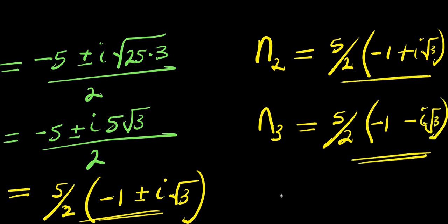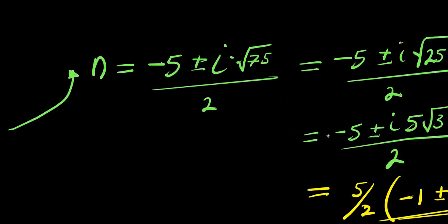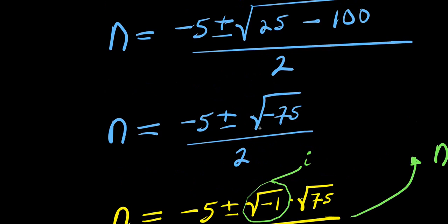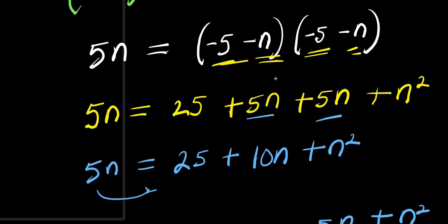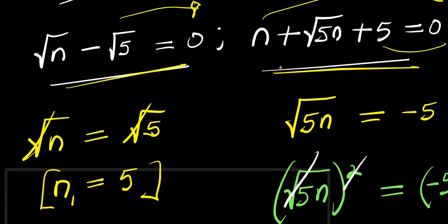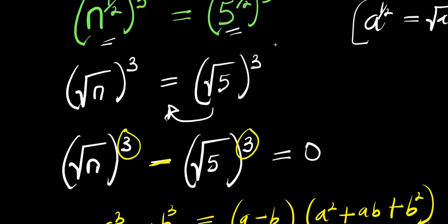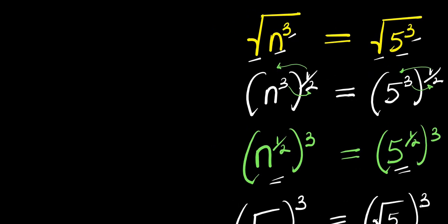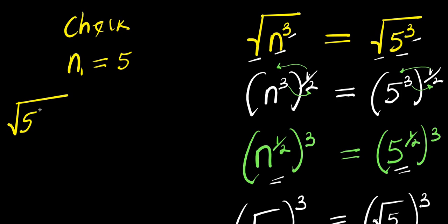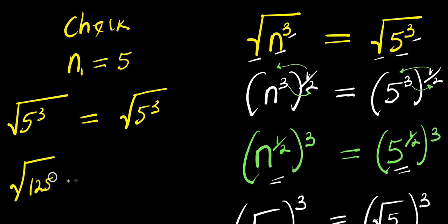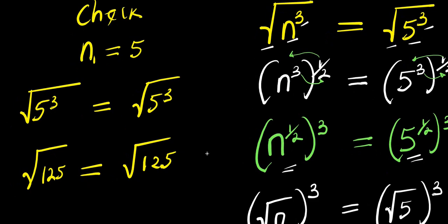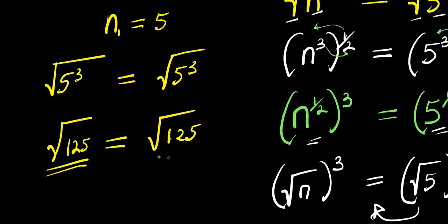So those are the three solutions: two complex solutions n₂ and n₃, and one real solution n₁ equals 5. To verify n₁: substituting n equals 5 gives square root of 5 to the power 3 equals square root of 5 to the power 3, which is true — left hand side equals right hand side.